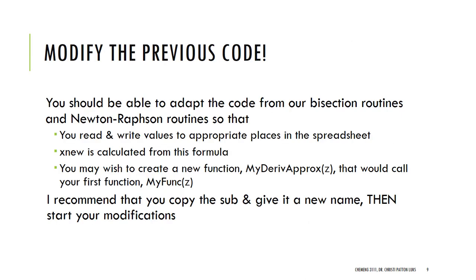I am not going to take us into Excel or VBA on this one, because I think it's pretty straightforward. You should be able to adapt the code that we've used before. So from our bisection routine, from the Newton-Raphson routine, you're going to need to read and write values to the appropriate places in the spreadsheet. Now remember, we're going to be having to bring in two new values. So that is more like the bisection method.